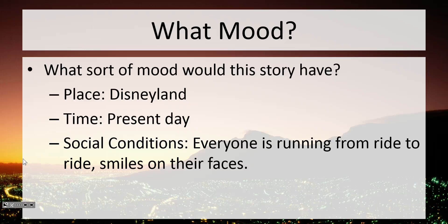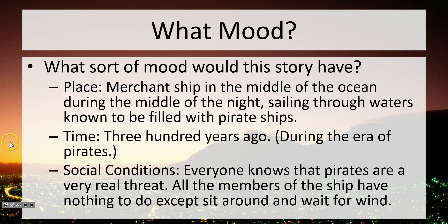A setting is used to manipulate our emotions and get our feelings going when we're reading a story, and that way whoever's making the story can manipulate our emotions — which is kind of a reason most of us like stories, because it's fun to have our emotions manipulated. What kind of mood does this story have? It's a merchant ship in the middle of the ocean during the middle of the night, sailing through waters known to be filled with pirate ships. The time: 300 years ago, when pirates were common. Social conditions: everyone knows that pirates are a very real threat, and all the members of the ship have nothing to do except sit around and wait for the wind. What's the mood? Most people would go with tense, nervous, creepy, or eerie — done on purpose to make us as readers feel a certain way.